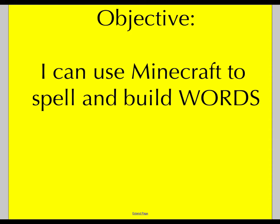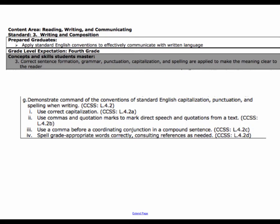Students are going to spell words that they are using to build a house, so they have to spell the materials. This is for grade 4 writing and composition. Students use correct spelling, apply it to make meaning, and then use grade-appropriate words correctly.